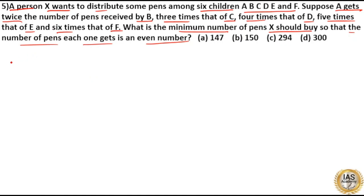The question clearly says A has more number of pens. Number of pens with A is 2 times that of B, 3 times that of C and 4 times that of D and 5 times that of E and 6 times that of F.